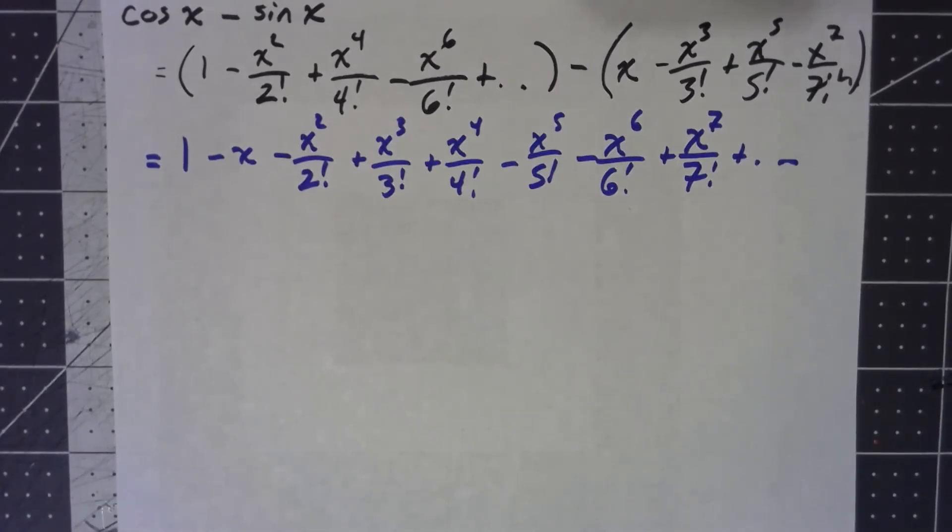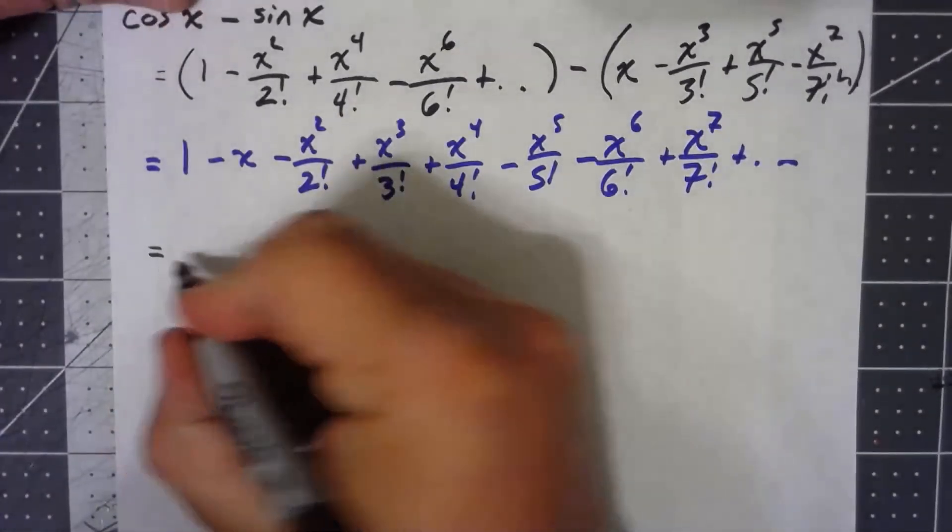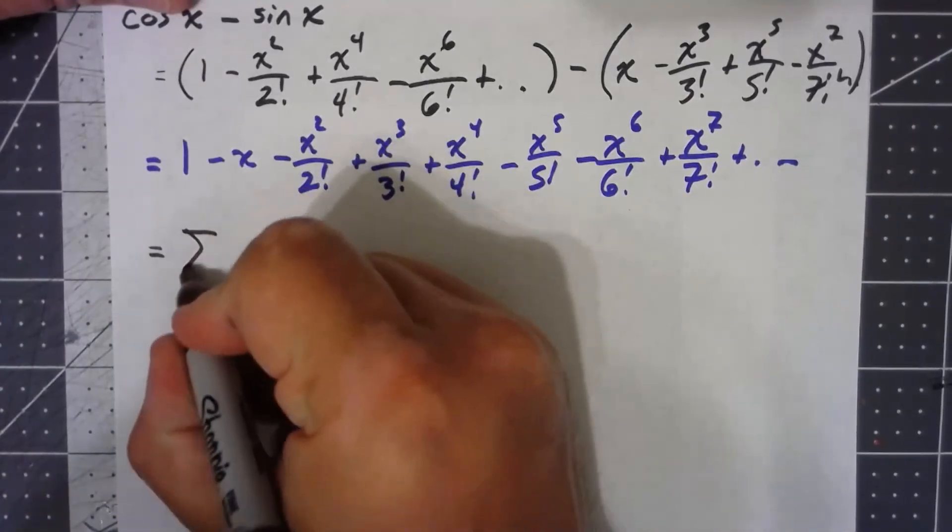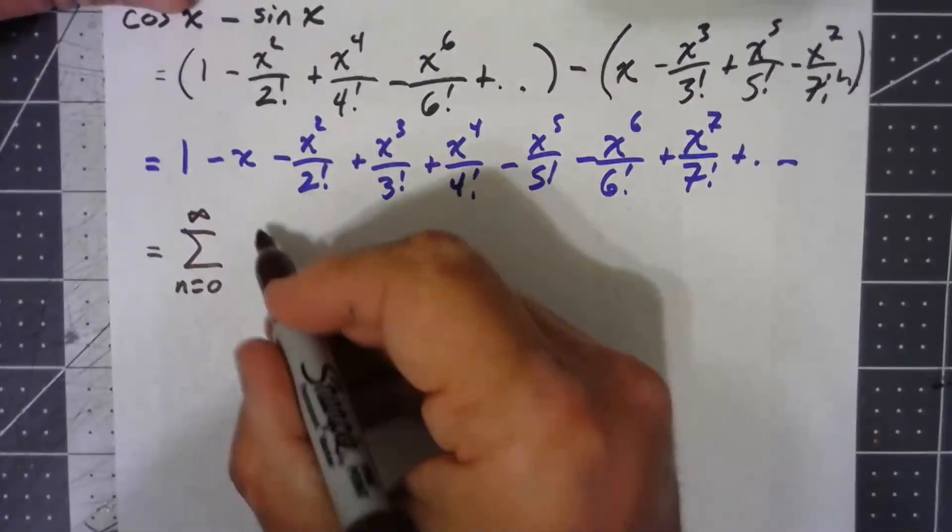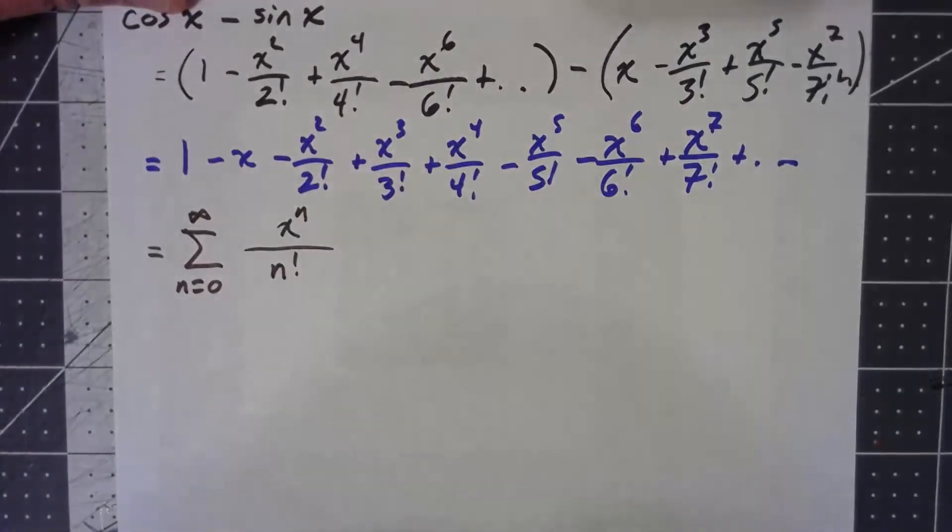Well, I'm going to have to kind of cut this thing short, but you should double check this and see it yourself. To get that thing, the easy part is we've got x to the n over n factorial for all values of n from 0 to infinity.